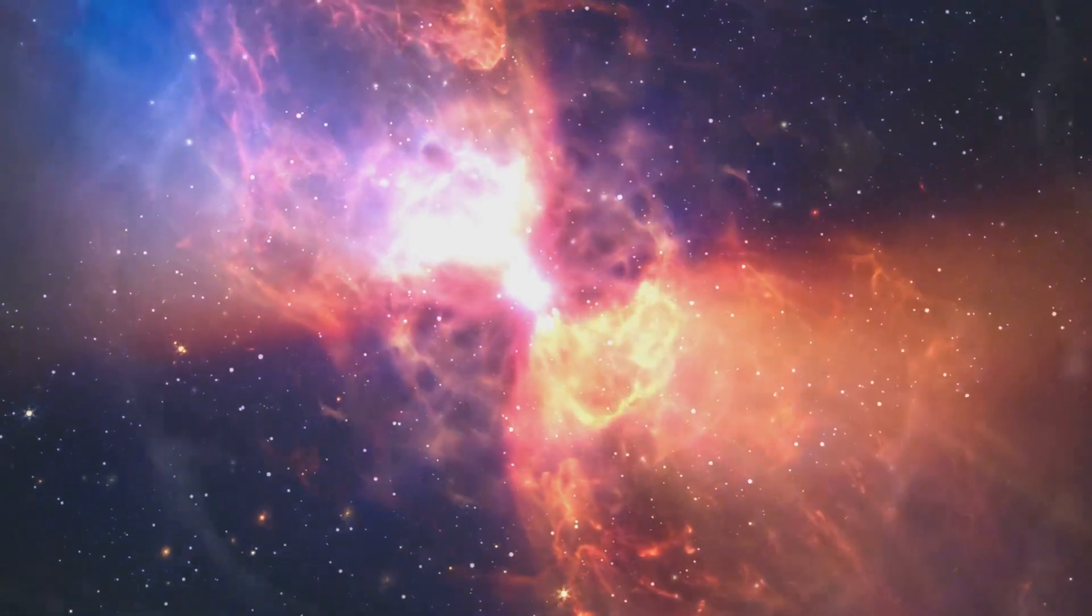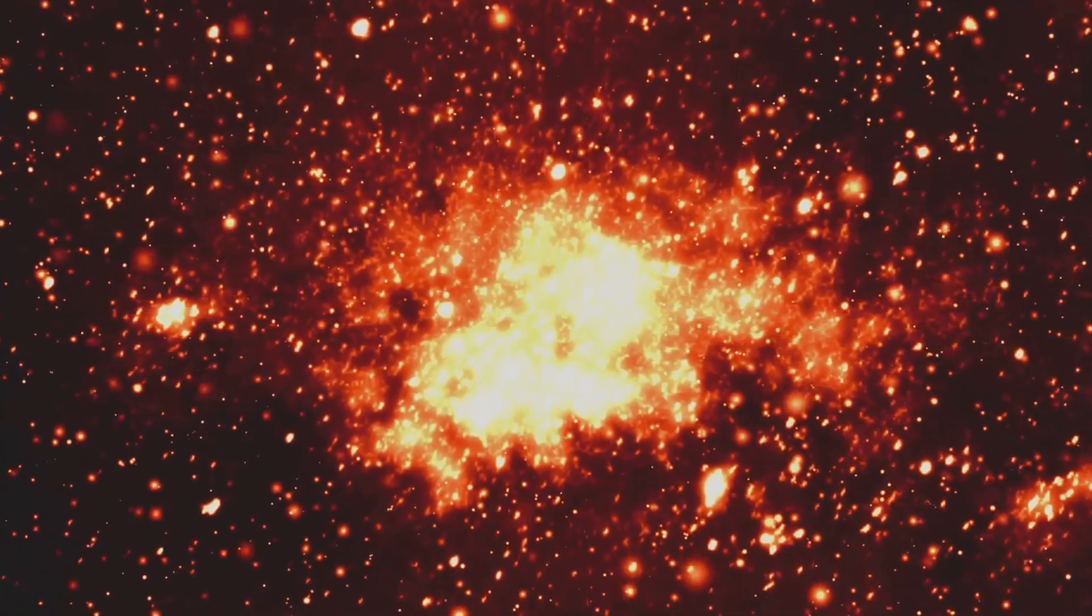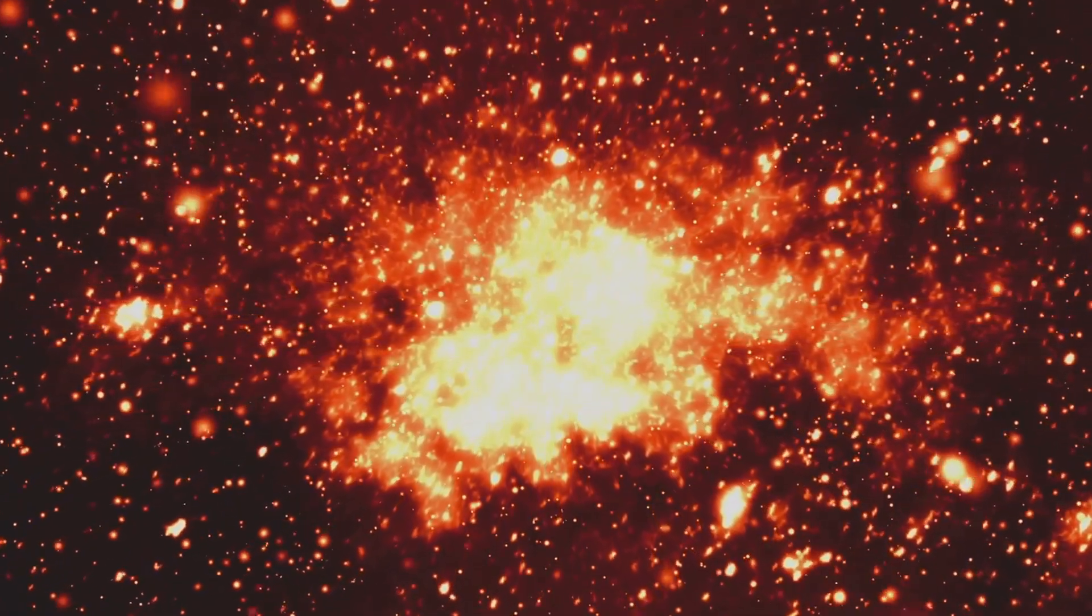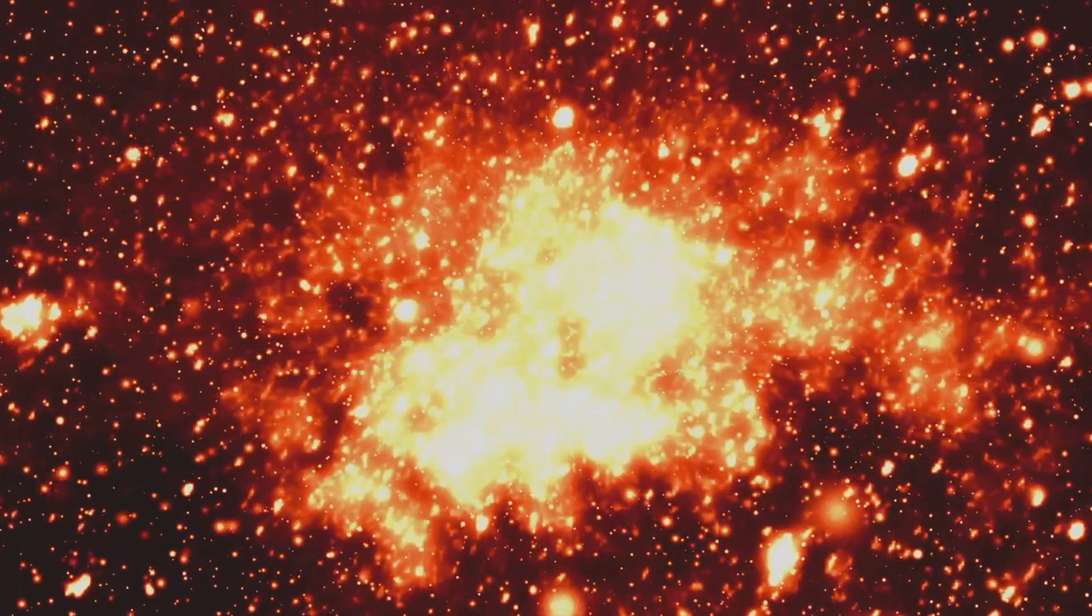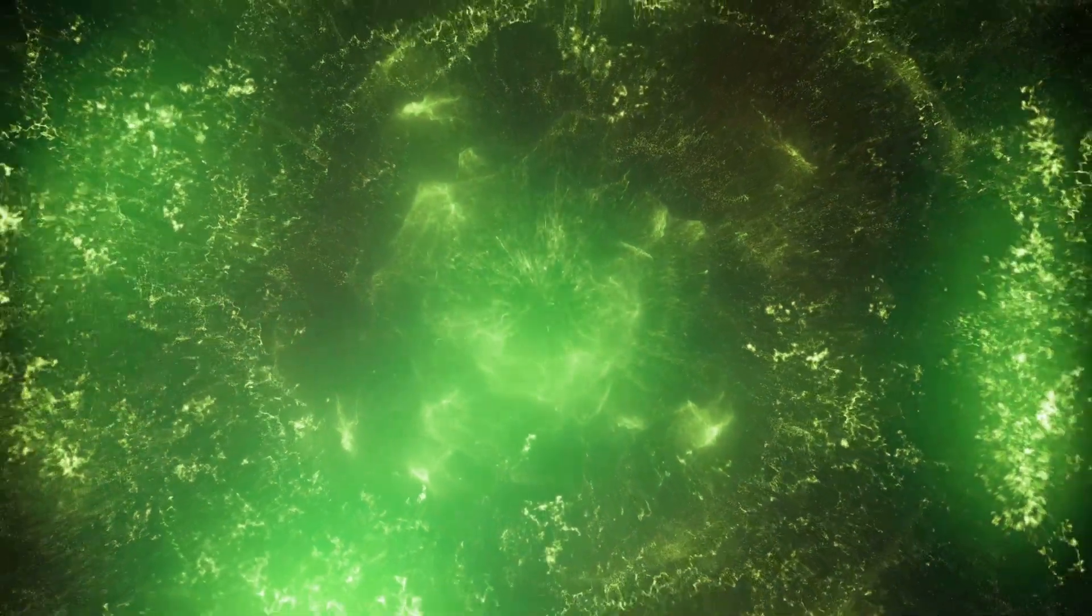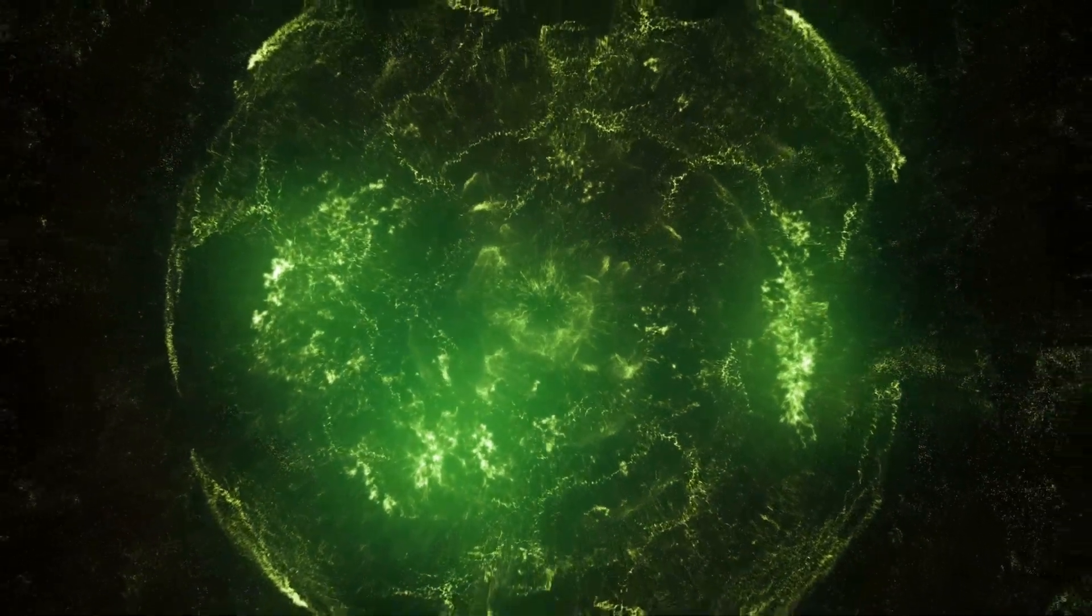This incredible speed is a testament to the power of supernova explosions. When a star goes supernova, it doesn't just shine brightly, it can also kick out the neutron star at its core with tremendous force. This is known as the recoil effect, and it's what gives neutron stars like RXJ08224300 their amazing velocity. But these high-speed neutron stars don't just impress us with their speed, they also provide valuable insights into the nature of supernova explosions and the extreme physics of the cosmos. These observations continue to challenge and expand our understanding of the universe.